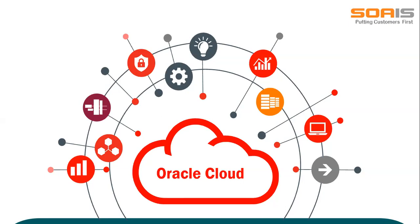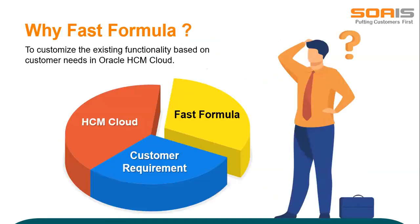Oracle SaaS applications are offered across the industrial sector with various deployment options to adhere to compliance standards. Now let's look at why Fast Formula. When it comes to business processes, each industrial sector differs from one another. They have different requirements to complete their business processes, which need to be addressed and fulfilled. In order to fulfill such business needs, Oracle provides us Fast Formula. We would say Fast Formula is the backbone of any HCM implementation.